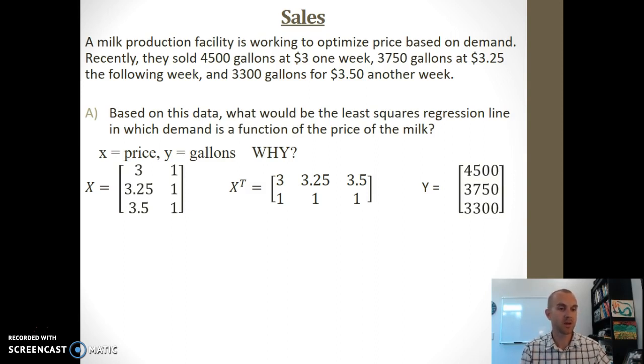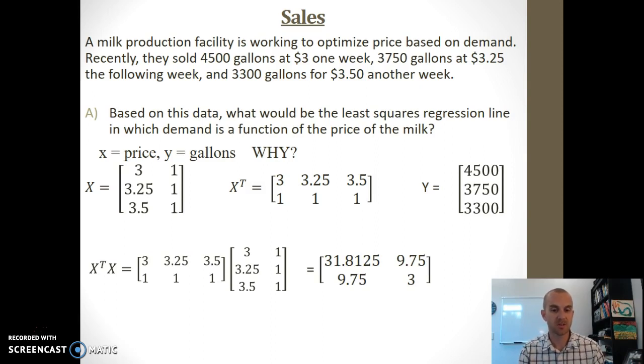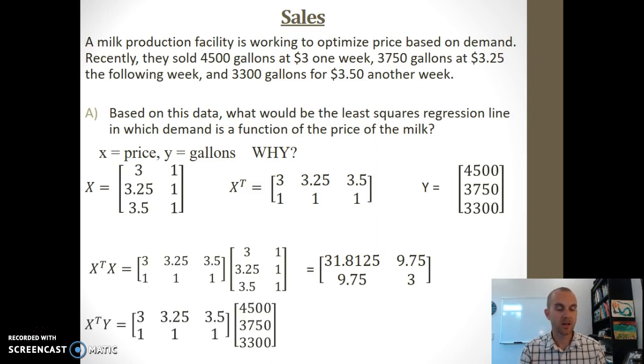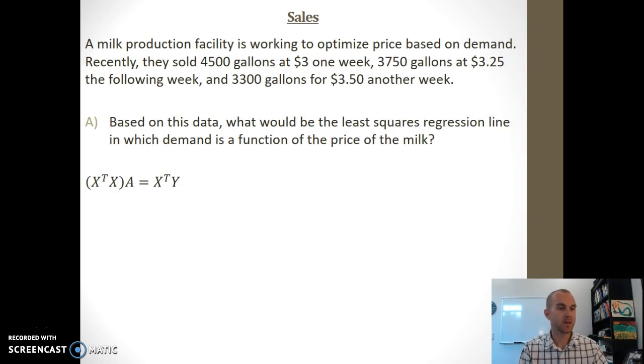Now I multiply X transpose times X. When I multiply that, I get a 2 by 2 matrix. I can follow my rules of matrix multiplication for that. Then I do X transpose times Y, which creates a 2 by 1 matrix. I take these values and put them back into the equation where (X^T X)A = X^T Y. Now I have my values to plug in.